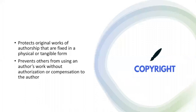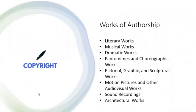Now let's start taking a closer look at each of the four major tools used in IP, starting with copyrights. Copyright protects original works of authorship that are fixed in a physical or tangible form. Specifically, this protection attempts to prevent others from using an author's work without authorization or compensation to the author. Now let's break down the definition of copyright, starting with what are works of authorship.